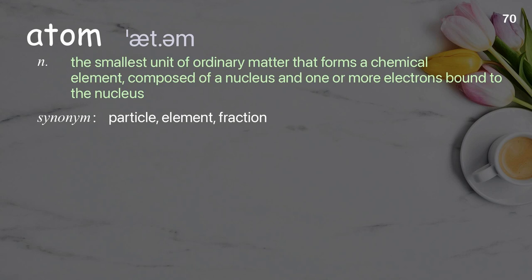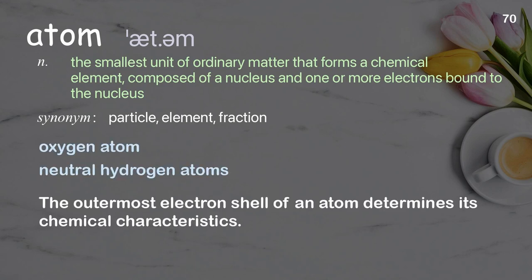Atom: the smallest unit of ordinary matter that forms a chemical element, composed of a nucleus and one or more electrons bound to the nucleus. Examples: oxygen atom, neutral hydrogen atoms. The outermost electron shell of an atom determines its chemical characteristics.